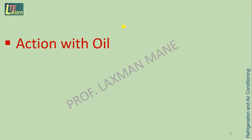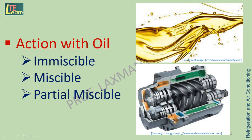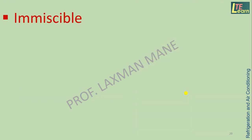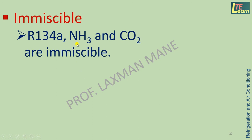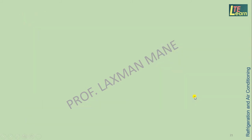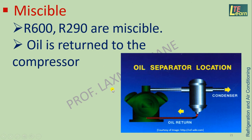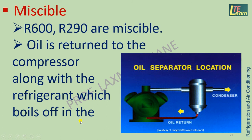The action of refrigerant with oil falls into three categories: immiscible, miscible, and partially miscible. Oil used in a compressor for lubrication is used along with refrigerant. For immiscible refrigerants — R134A, ammonia, and carbon dioxide — an oil separator is installed in the discharge line after the compressor to separate the lubricant oil and prevent it from passing to the condenser. Miscible refrigerants such as R600 (butane) and R290 (propane) allow oil to return to the compressor along with refrigerant, which boils up in the evaporator.